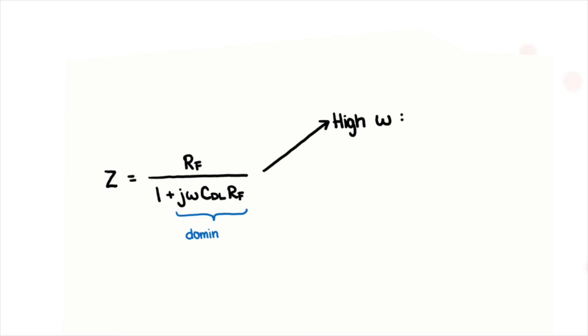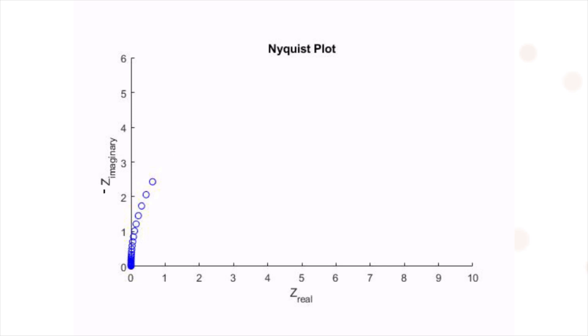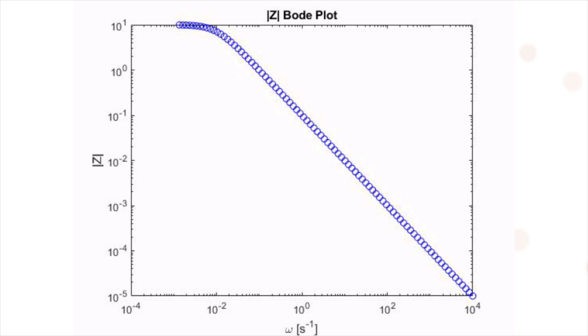To plot the Nyquist plot in this case, we can think about the limits with respect to frequency. At very high frequency, the impedance goes to zero. While at very low frequency, it approaches the Faradaic resistance. As a result, the Nyquist plot will be a semicircle.